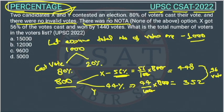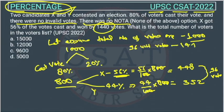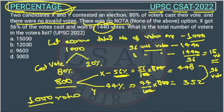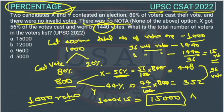But the question states that X won by 1440 votes. So 96 units of votes equal 1440. Using the unitary method, 1 unit equals 1440 ÷ 96 = 15 votes. We assumed 1000 total votes, so actual total = 1000 × 15 = 15,000 votes. The answer is Option A.